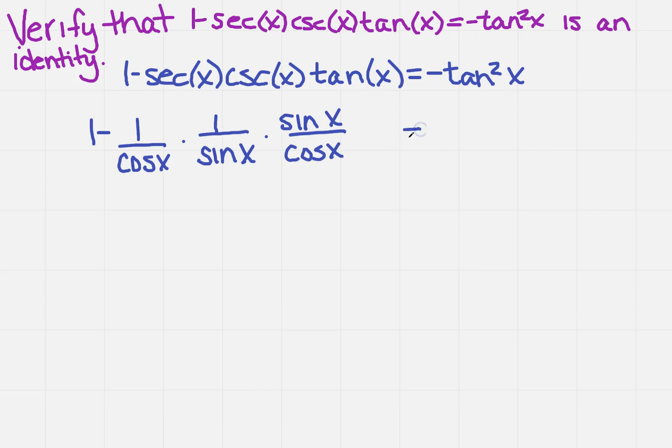And then we draw our equal sign. We're not going to do anything with the right-hand side, because we want the left-hand side to look like the right-hand side. So when I do the multiplication, I remember that anything over itself is 1, so my sines are going to cancel.